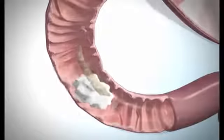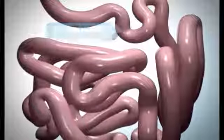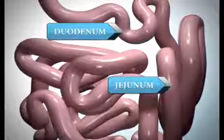The pyloric valve is a ring of muscle between your stomach and your duodenum. Most of the nutrients from the broken down food are absorbed in the duodenum and the jejunum, which is the second part of the small intestine.